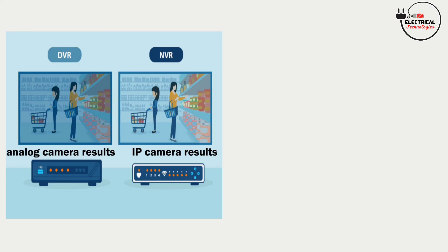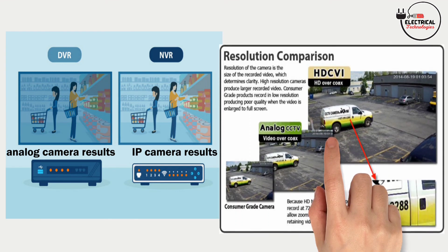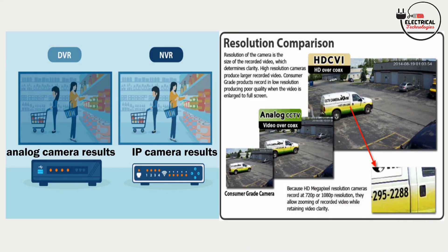IP cameras provide overall higher video quality than analog cameras. Analog cameras have overall lower quality than IP cameras but perform better in low light conditions. Analog cameras also have more limited sight ranges and don't offer the zoom and clarity of IP cameras.